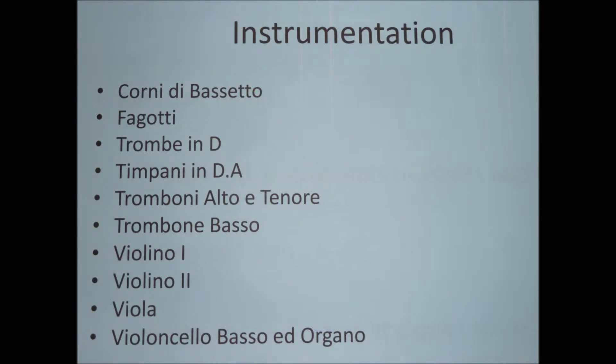This movement of the Requiem contains ten different instruments, which play together for the majority of the first half. Most of these instruments need no transpositions, such as the bassoon, the timpani, the alto, tenor, and bass trombone, the violins, and viola. The only two instruments which need to be transposed are the basset horn, which is a perfect bit lower when written in treble clef, and the trumpet in D, which is a whole step higher when written in treble clef as well. This movement is one of the largest regarding instrumentation, and all instruments play for the majority of the first half.